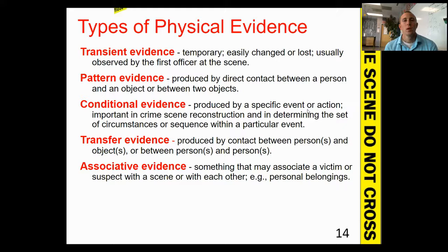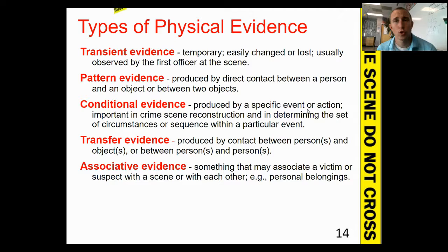Now that we've talked about our general categories — circumstantial, direct or testimonial, and demonstrative — let's look at the different types of physical evidence. These are the ones we'll be focusing on mostly this semester, and there are five main categories: transient, pattern, conditional, transfer, and associative. We'll go through each of these in more detail — I'd recommend pausing the video and jotting these definitions down.